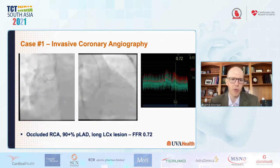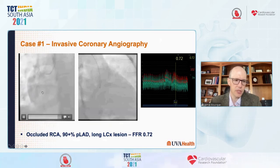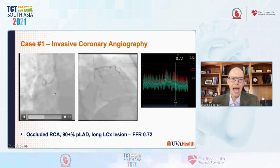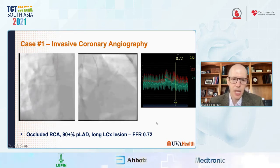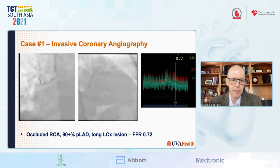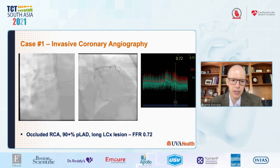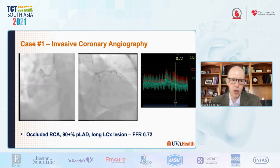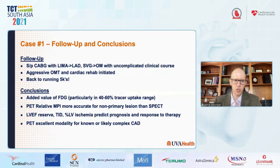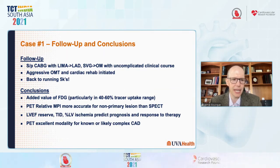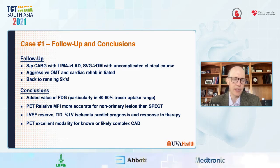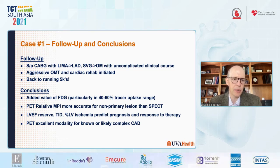The patient was sent for invasive coronary angiography. There was a continued CTO of the RCA, a greater than 90% proximal LAD lesion, a long left circumflex lesion, and FFR on the left circumflex was found to be 0.72. Given findings of multivessel disease, the patient underwent coronary artery bypass grafting with a LIMA to the LAD and a saphenous vein graft to the OM. Aggressive optimal medical therapy was started, cardiac rehab initiated, and she is ultimately back to running 5Ks with no functional limitations.